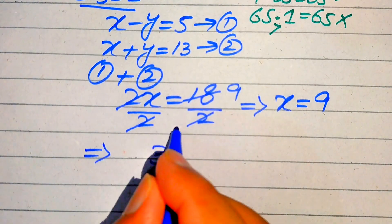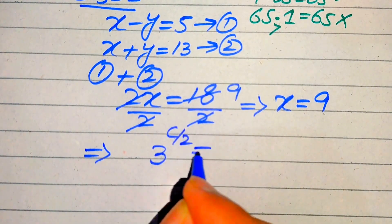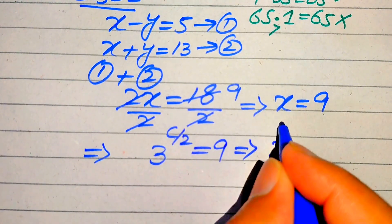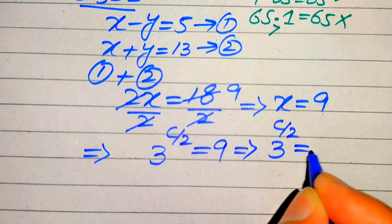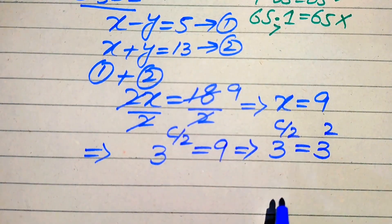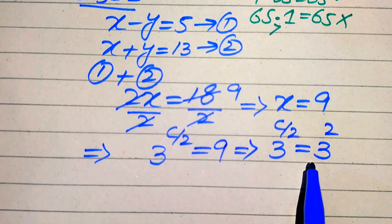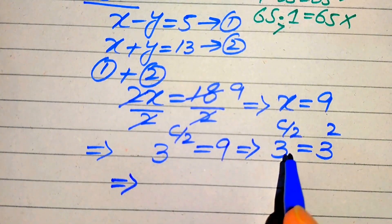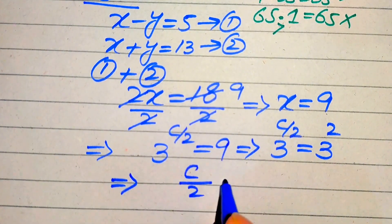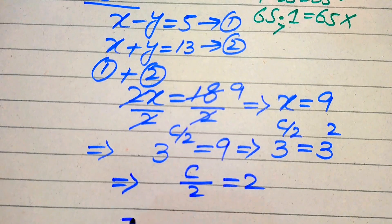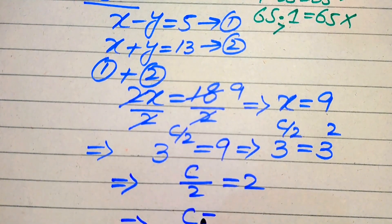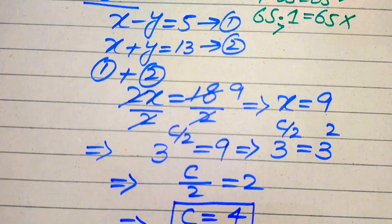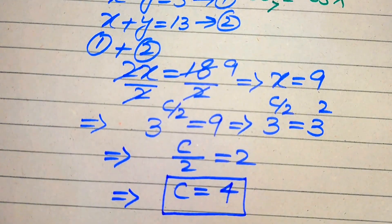Substituting x equals 9 back, we have 3 to the power of c over 2 equals 9. Since 9 equals 3 squared, we write 3 to the power of c over 2 equals 3 squared. Comparing exponents, c over 2 equals 2, giving us c equals 4. This is the value of c from Case 1.